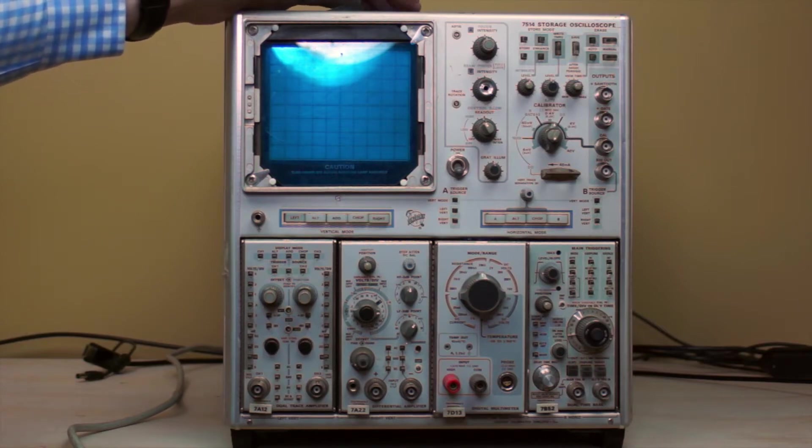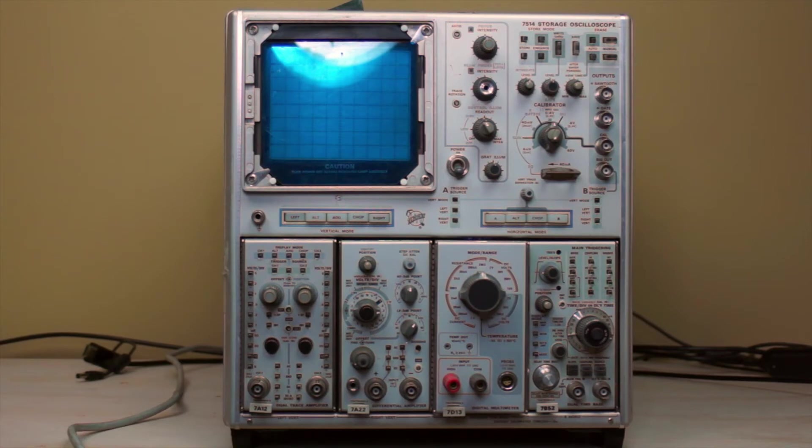It was the first storage oscilloscope in the 7000 line, which is a line of scopes that lasted for 15 or 20 years. It is a rare model. They did some improvements in 1970-71 to the actual mainframe unit, and because of that this unit was discontinued really quickly.